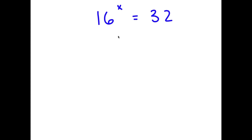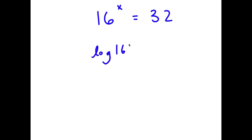In this problem, I have 16 to the power of x is equal to 32. So to solve this, I have multiple different methods. My first method, I'm going to take the log on both sides. So I have log 16 to the power of x is equal to log 32.